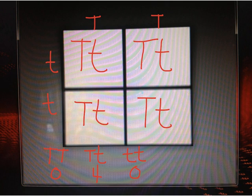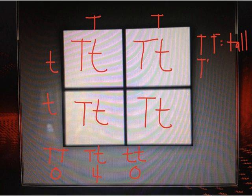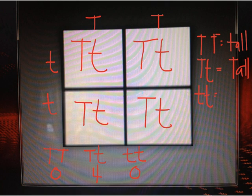That is, each of them consists of the dominant capital letter T and a recessive small letter t. Since the homozygous dominant gene expresses itself as tall stem, and only when the gene is homozygous recessive can it be expressed as dwarf stem, therefore all of the offspring will inherit the tall stem from the parent plant.